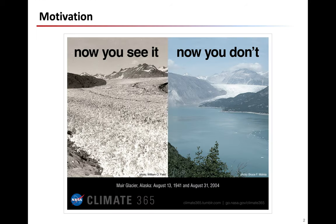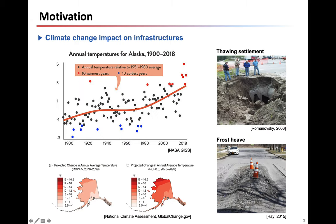Rather than talking about climate change in the abstract, I want to start my presentation with this photograph. This picture shows how the Mirror Glacier area in Alaska changed from 1941 to 2004. By simply looking at this picture, we can see how serious climate change is. This figure shows that annual mean temperatures in Alaska have been increasing for the past 50 years, and IPCC predictions based on RCP scenarios show that temperatures will continue to rise. Especially in cold regions, the temperature rise will continuously degrade the permafrost, which involves not only thawing-induced damage to infrastructures, but also freezing-induced damages due to extreme precipitation patterns and refreezing of groundwater.